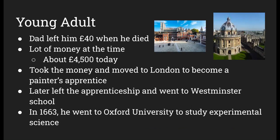As a young adult, when his dad died, he left him with 40 pounds. As of 2017, that's about 4,500 pounds. He took the money his dad left him and moved to London to become a painter's apprentice, which I'll touch on at the very end. He later left apprenticeship and went to Westminster School, and after that went to Oxford University to study experimental science. The photo on the top left is Westminster School and the top right is Oxford.